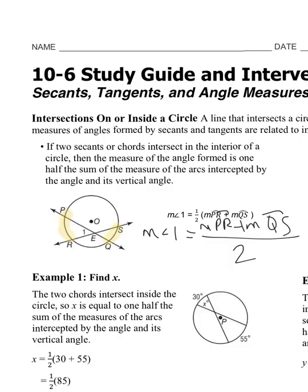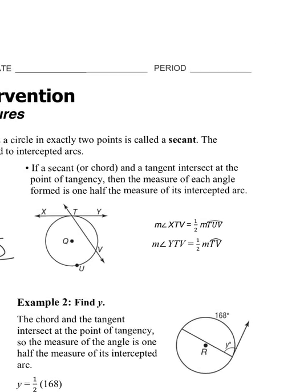Now we go on to the second theorem. On lesson 10-5, we learned about tangents — a tangent line intersects the circle at only one point. In this case, XY is your tangent and TV is our secant. If a secant and a tangent intersect at the point of tangency, then the measure of each angle formed is one half the measure of its intercepted arc. You can either multiply by one half or divide by two.